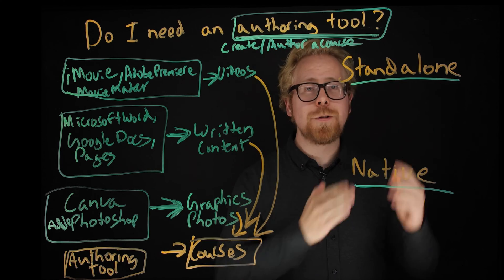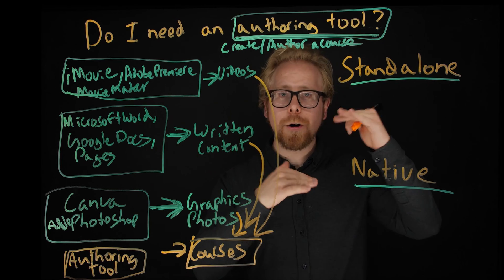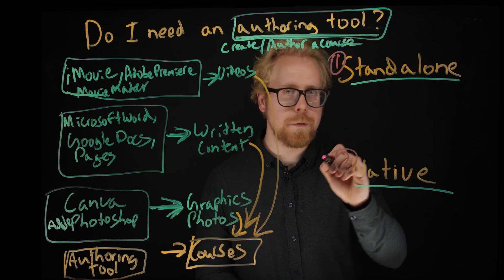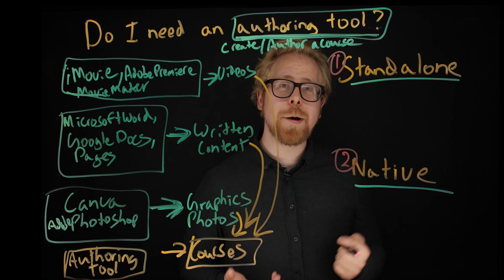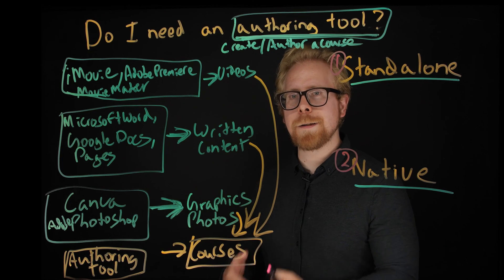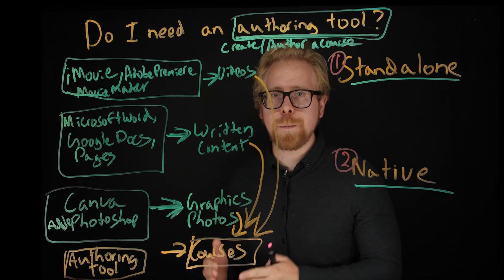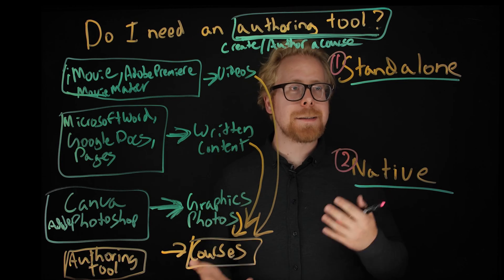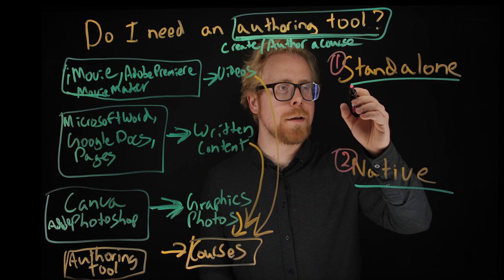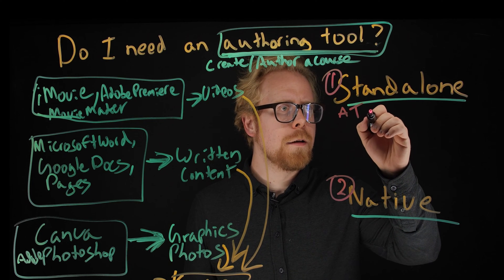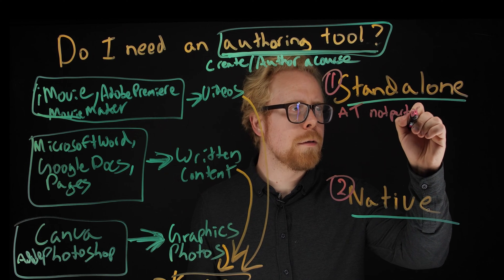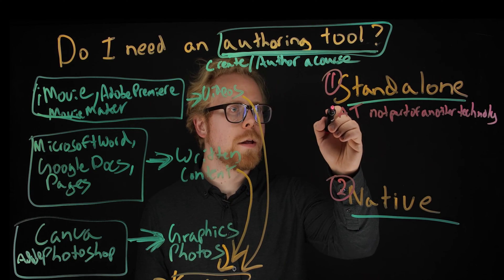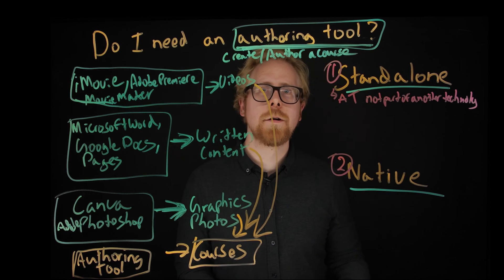So what are the two types of authoring tools? Authoring tools are really broken up into two types. The first are standalone and the second are native. What does standalone mean? An authoring tool that is not part of another technology — not part of a learning management system, not part of any other type of technology. It stands alone. That's the definition.